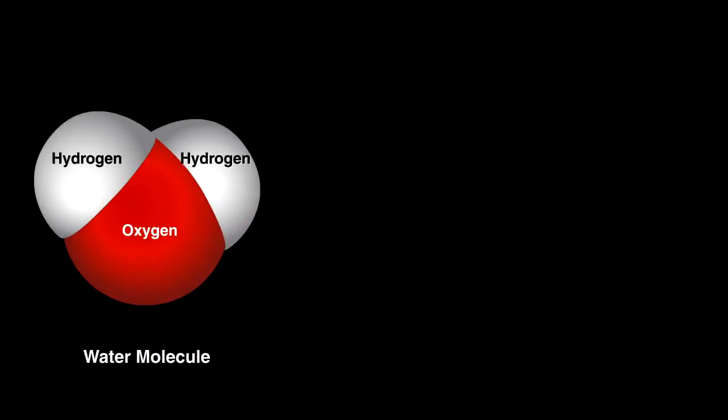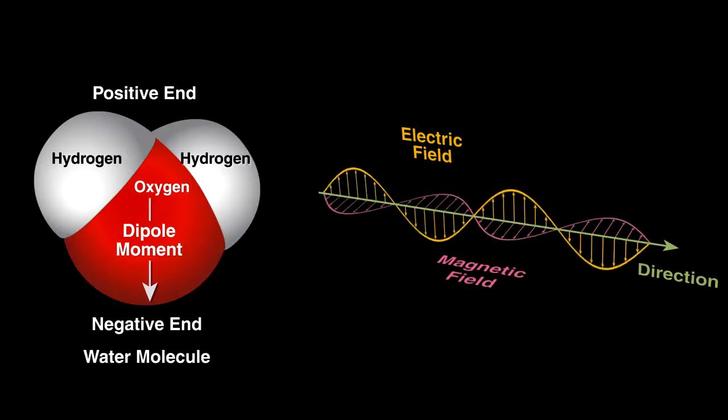Well, our food is filled with water, which is positively charged at one end and negative at the other. To give these molecules more energy, we expose it to electromagnetic waves that emanate from the tube.